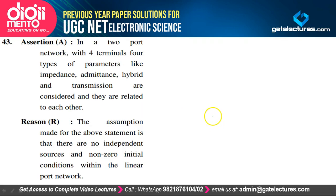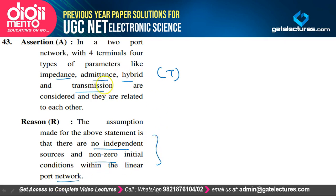In a two-port network with four terminals, four types of parameters — impedance, admittance, hybrid, and transmission — are considered and are related to each other — true. The assumption is that there are no independent sources and no non-zero initial conditions within the linear port network — true. Both statements are true and R is the correct explanation of A. Option A is the correct option.